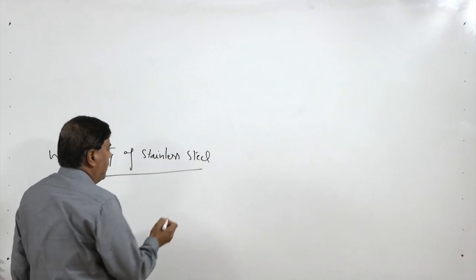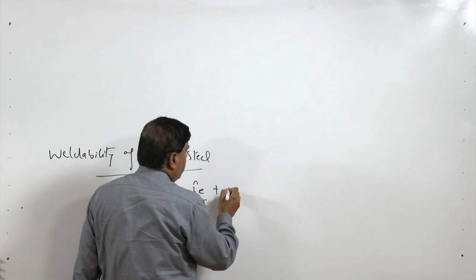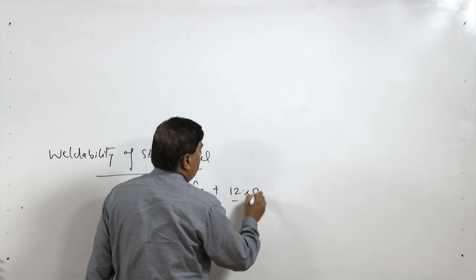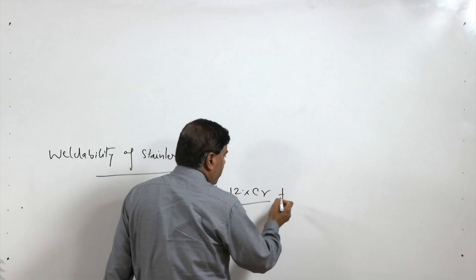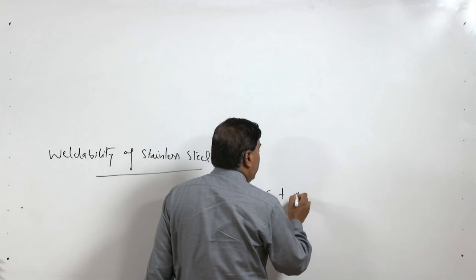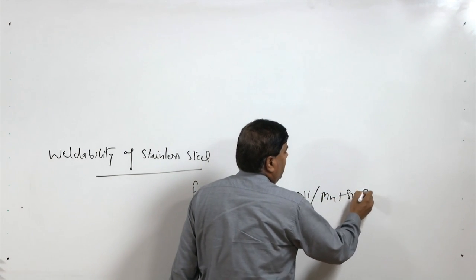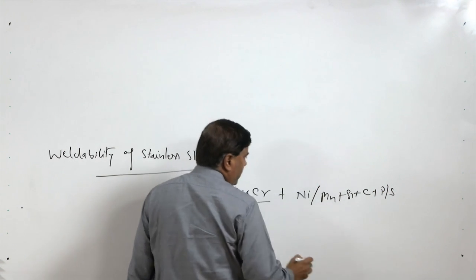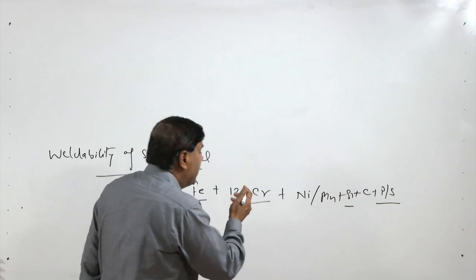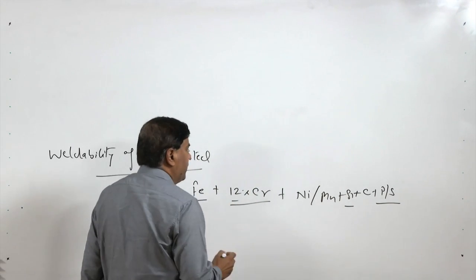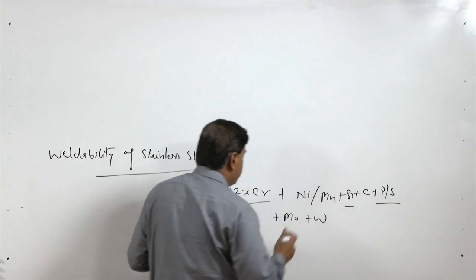Stainless steels are basically iron-based systems wherein chromium is normally added more than 12 percent. Apart from chromium, there are other alloying elements like nickel, manganese, silicon, carbon, phosphorus, and sulfur. Phosphorus, sulfur, and silicon are residual elements, while nickel, manganese, and chromium — along with molybdenum and tungsten — may be added to achieve specific sets of properties.